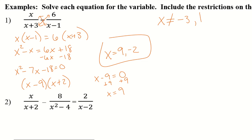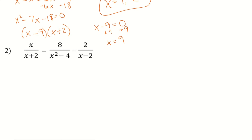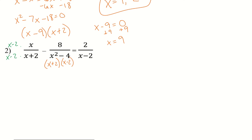Let's go ahead and check out the second example. With this one, we're first going to have to combine the left side of my equation before we try cross multiplying. So I have x plus 2 in one denominator and x plus 2 and x minus 2 in the other, so I'm going to multiply this fraction by x minus 2.